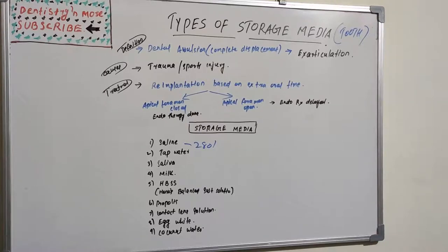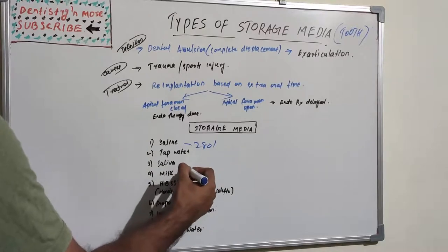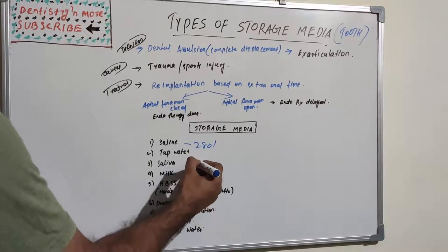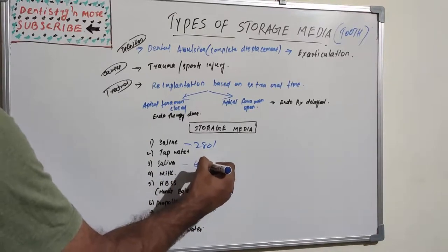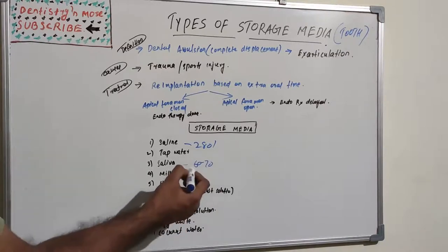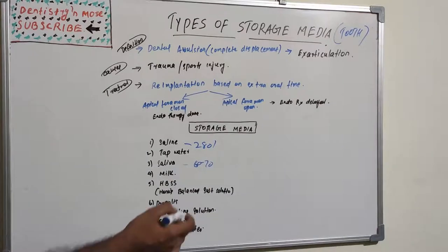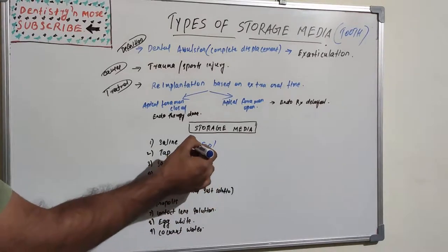Saliva is a good storage media for shorter period of time. Its osmolarity is much lower, like 60 to 70 compared to the saline. It has a harming effect on bacterial contamination, that is an advantage of saliva, but osmolarity is comparatively low compared to saline.